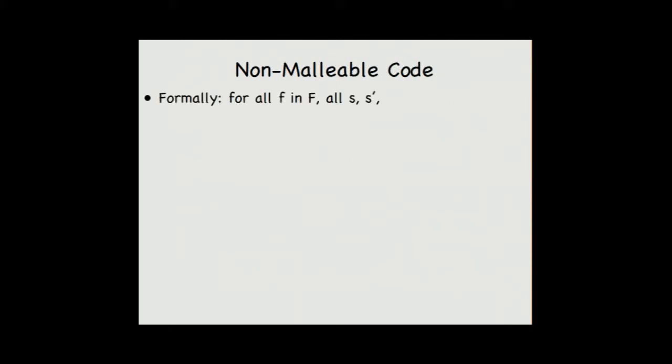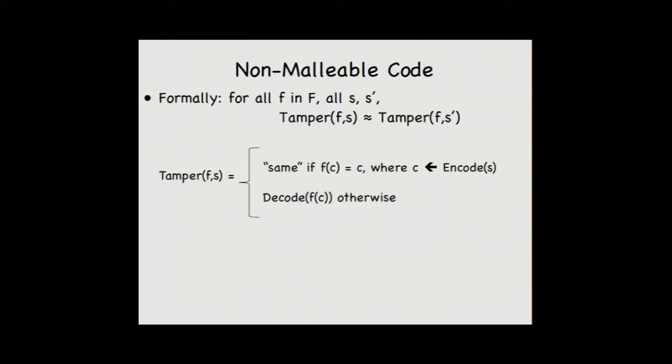This is formally captured by this: we say for all little f, function f in the class big F and all input strings S, S prime, the following tampering experiments are indistinguishable. We have tamper F and S which output same if F of C equals C, that captures the first case of the outcome saying the tampering function does not change anything. And otherwise it outputs the decode of F of C. So we say that S and S prime in this experiment, if F changes C, then the decode should be indistinguishable.